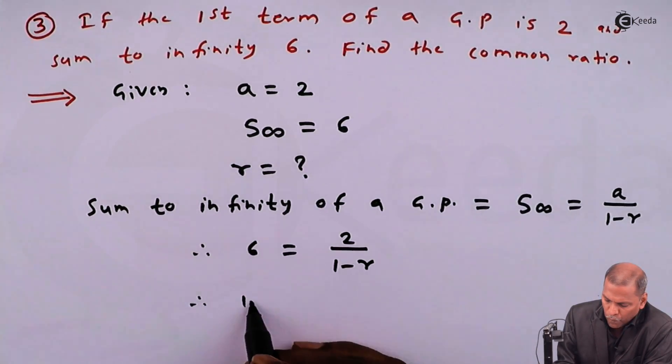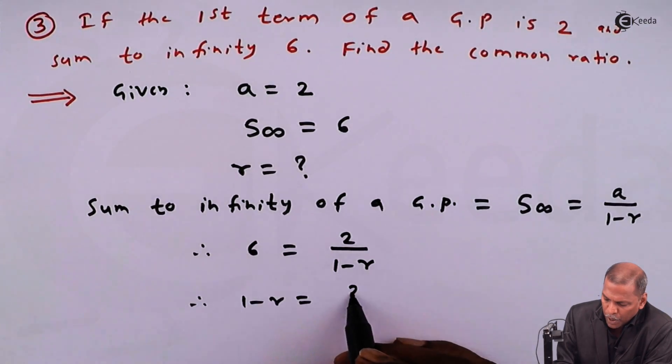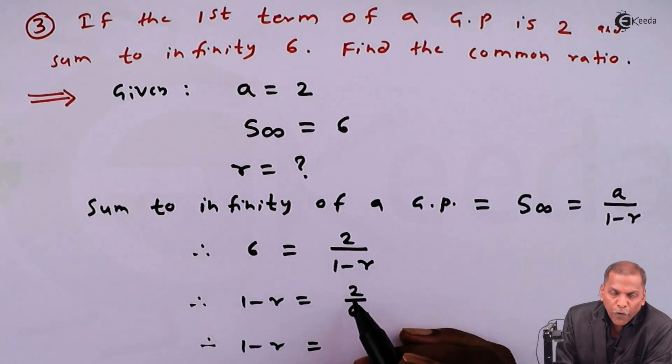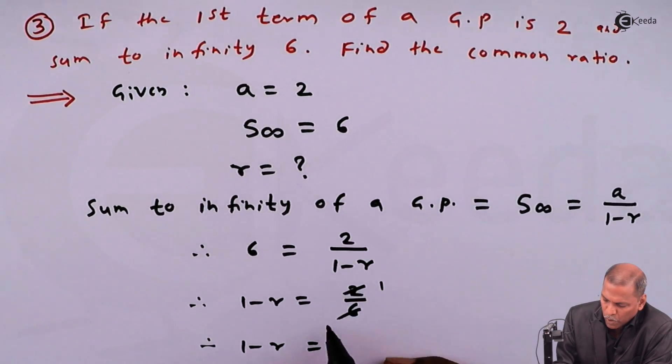Therefore, one minus r is equal to two upon six. Now we go for cancellation on right hand side. Two ones are two and two threes are six. So we have one minus r is equal to one upon three.